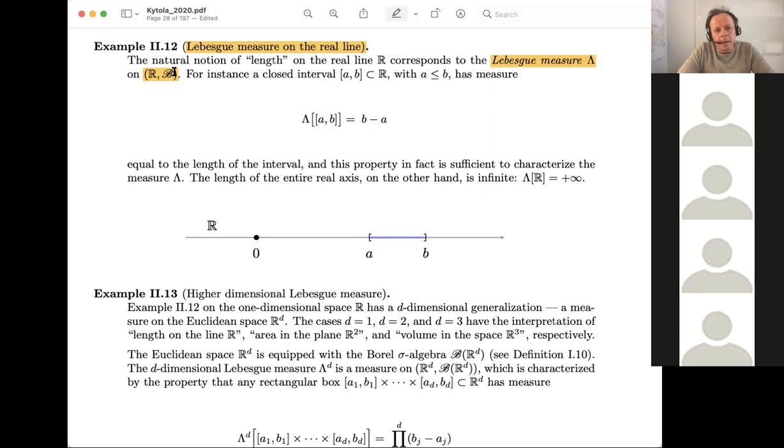And this sigma algebra contains the open sets, but then we know that the closed sets are complements of the open sets, so the sigma algebra also contains all closed sets. It contains unions of open, intersections of open and closed, and so on. So it's a good and big sigma algebra where we can work.